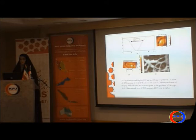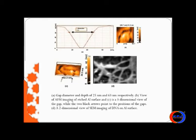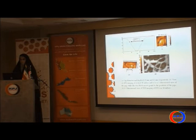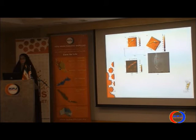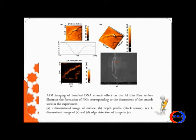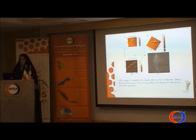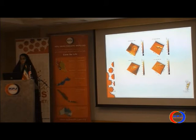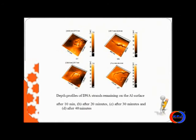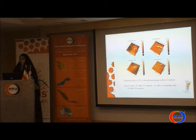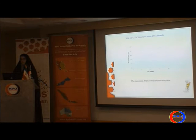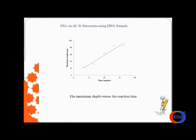Some of the results you can see in this slide — the dimension of the gap. You can see this is the nanoscale AFM image of the etched aluminum surface. This is another slide of the result, also an AFM image of one of the DNA strand effects on aluminum. We can see the nano-gap related to our work. This shows four time points for nano-gap creation: after 10 minutes, 20, 30, and 40 minutes. You can see after 10 minutes the nano-gap is about 27 nanometers, and it increases after 20, 30, and 40 minutes. In this diagram, you can see the maximum depth versus reaction time — after time, the nano-gaps increase.